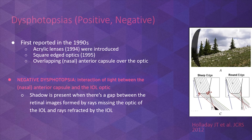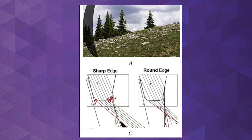Raytrace diagrams such as the one shown to your right, from Jack Holliday, provide a clear explanation for why patients with negative dysphotopsia see a dark crescent over the temporal side of the visual field.